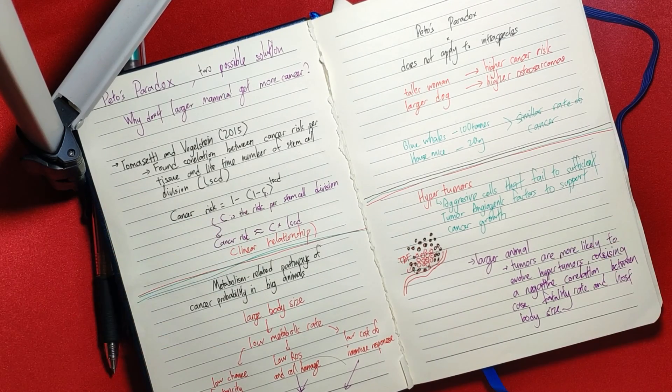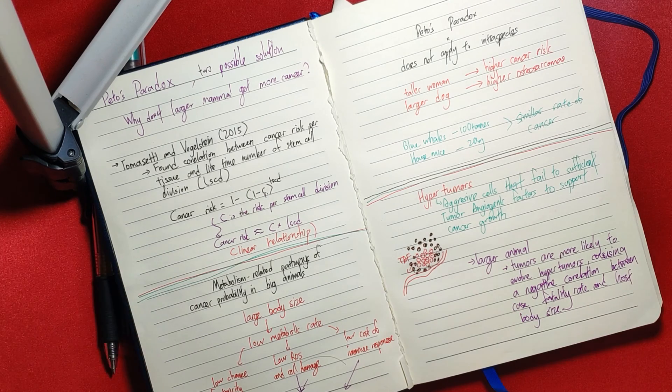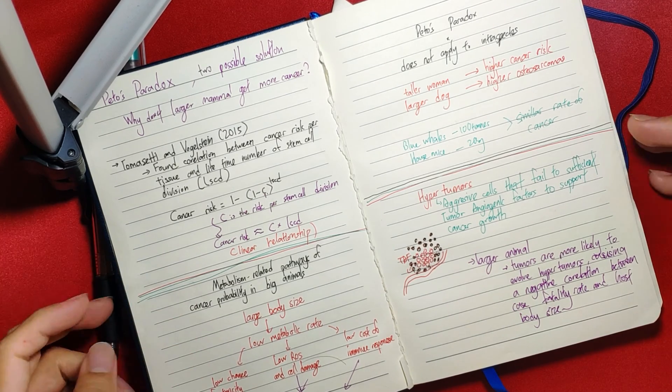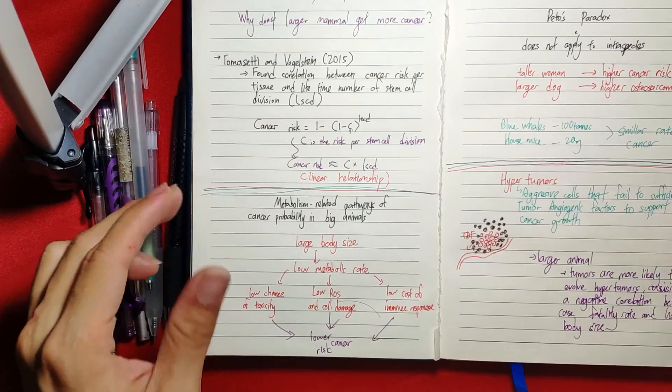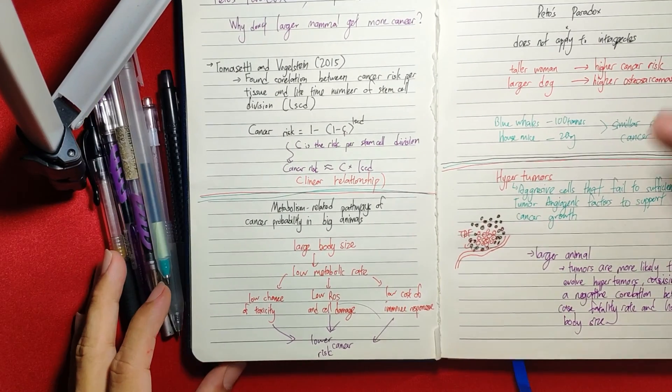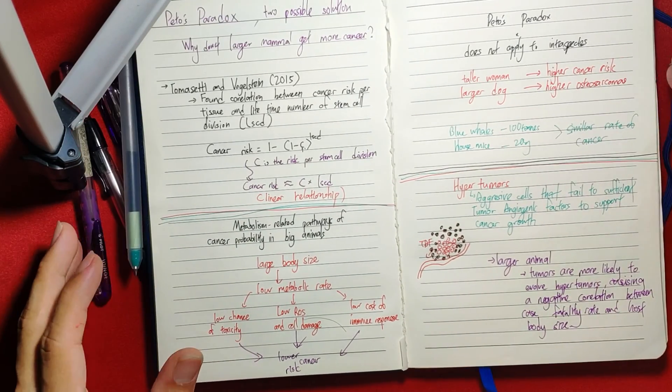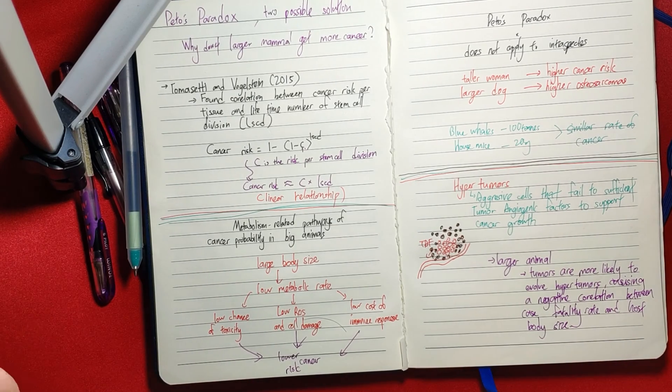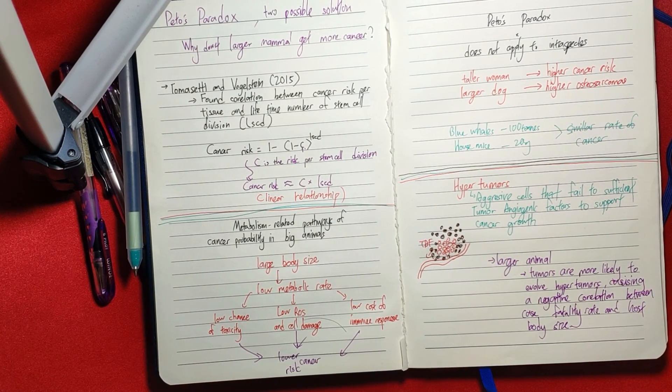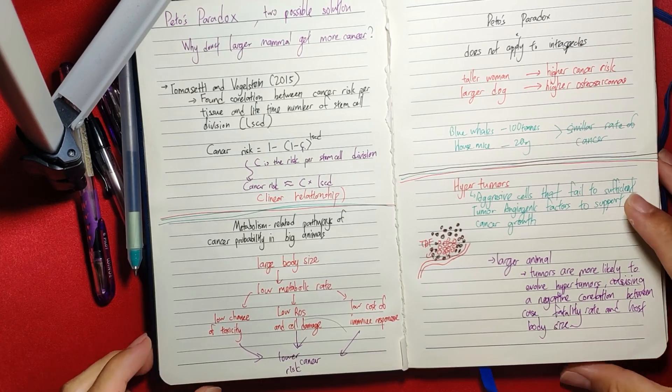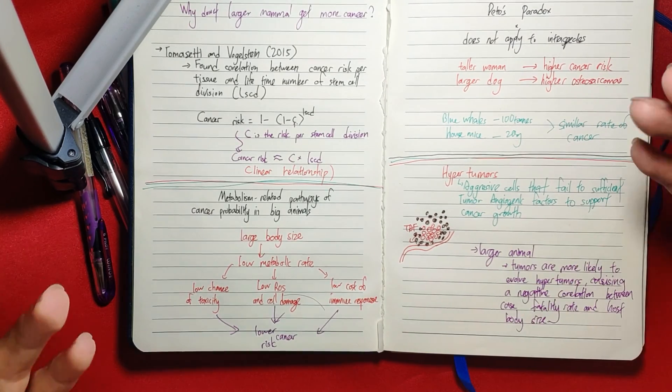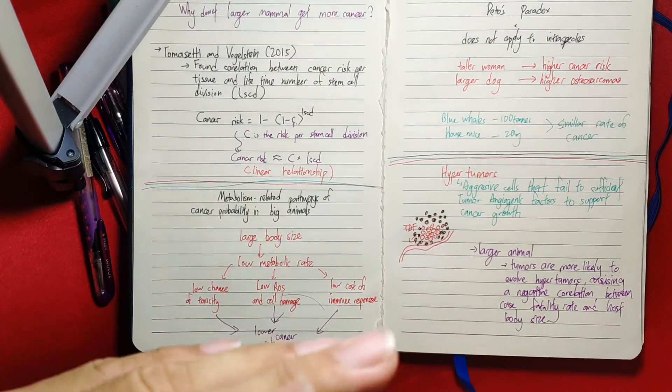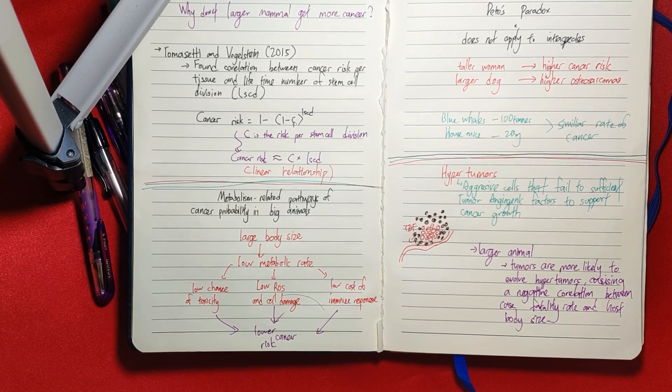But the problem is that among different species, when you compare a blue whale to a house mouse which weigh 100 tons and 20 grams respectively, they have either similar rates of cancer or blue whales actually have much lower rates of cancer compared to house mice. But that could be because of our sample size problem because there's very little blue whales in the world and we don't really understand how they work.